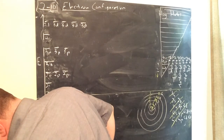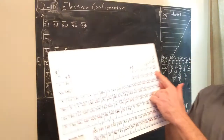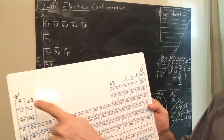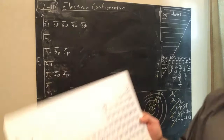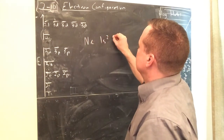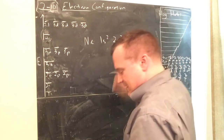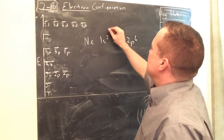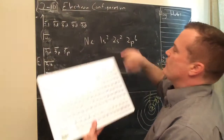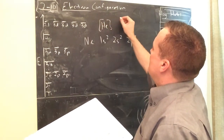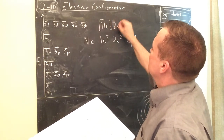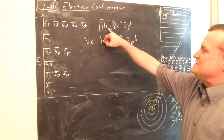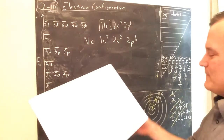Let's look at neon. Neon's full electron configuration is 1s² 2s² 2p⁶. The short form of neon would be written with helium in brackets: [He] 2s² 2p⁶. You're just writing He instead of 1s², though for neon it's almost not really a short form.